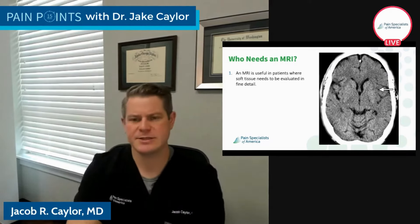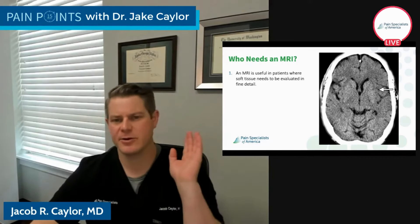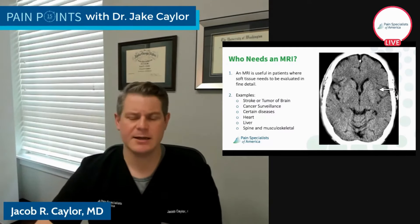So who needs an MRI? An MRI is useful in patients where soft tissue really needs to be evaluated in detail. The picture on the right is actually a CT scan of the brain — I use this to show the difference in clarity between a CT scan and an MRI. Examples of reasons we need MRI include: stroke or tumor of the brain, cancer surveillance, certain diseases such as multiple sclerosis where we need to evaluate how lesions are changing in time and space, looking at the heart and liver, as well as bread-and-butter stuff like the spine and other musculoskeletal structures such as large joints.